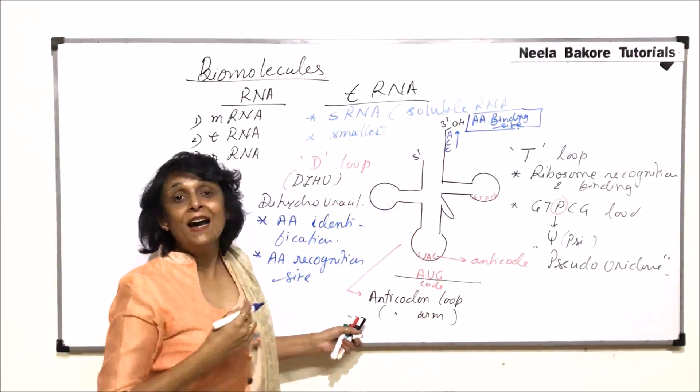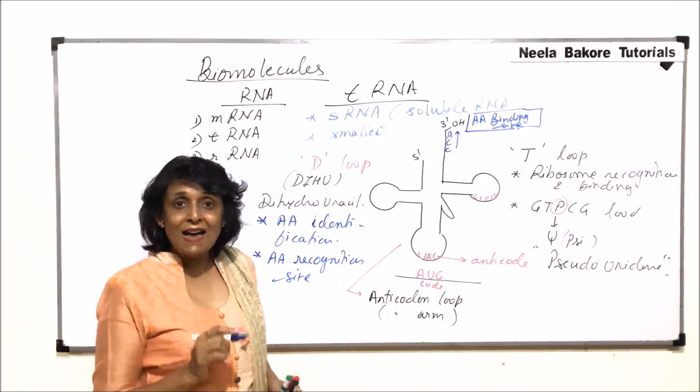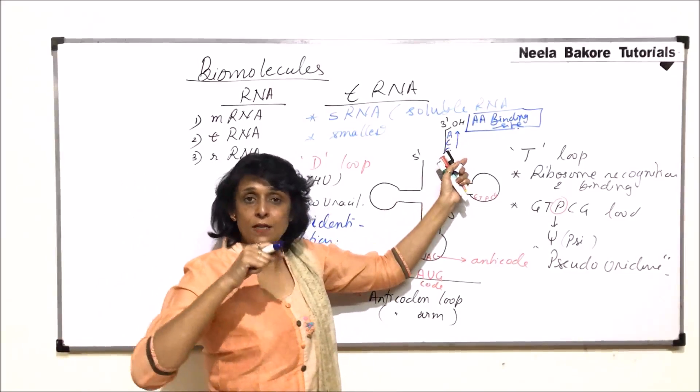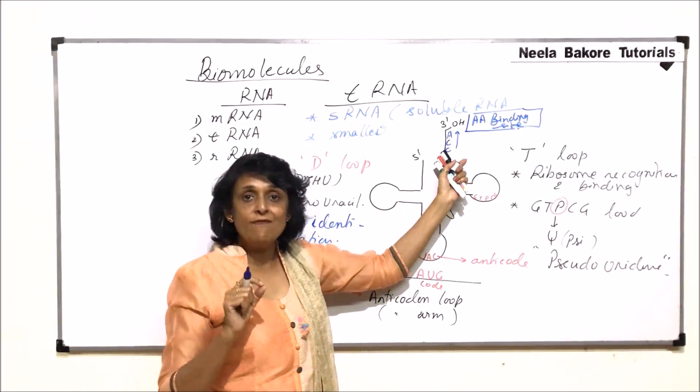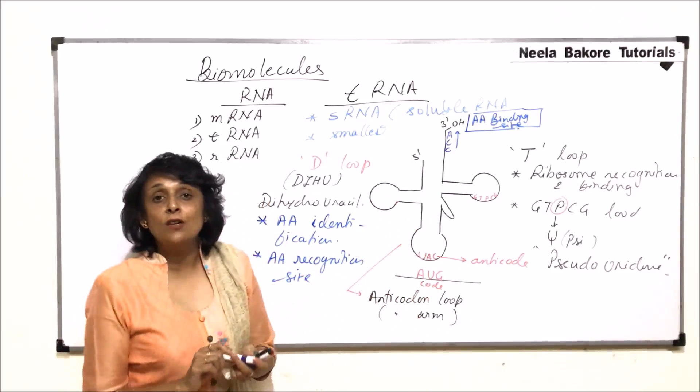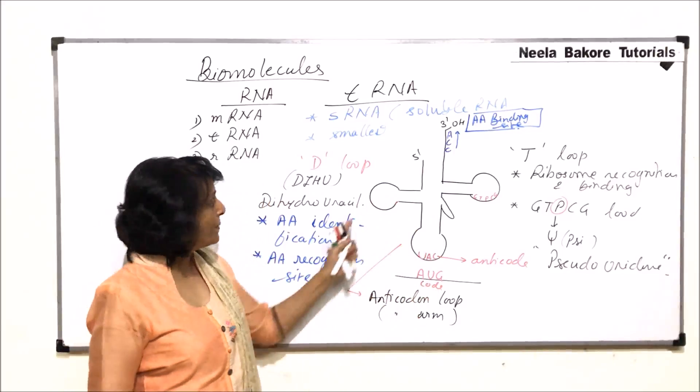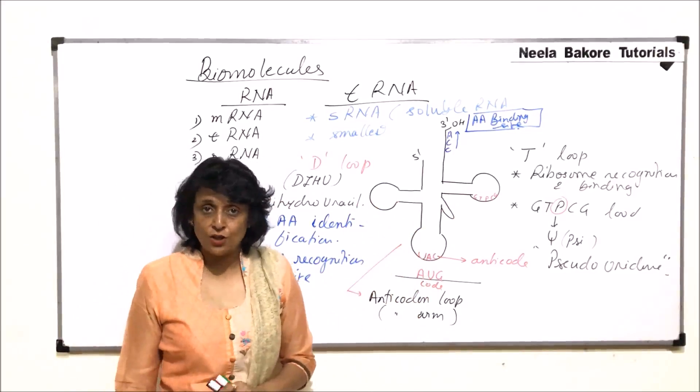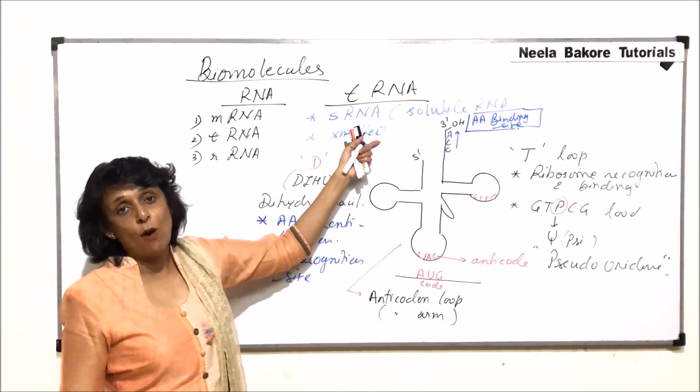We cannot say ACC. It would be a reverse code. So the last code is C-C-A because it is always read from 5' towards 3'. So this is the structure of tRNA. Because of these three lobes it is called a clover leaf-like structure and it is the smallest one.